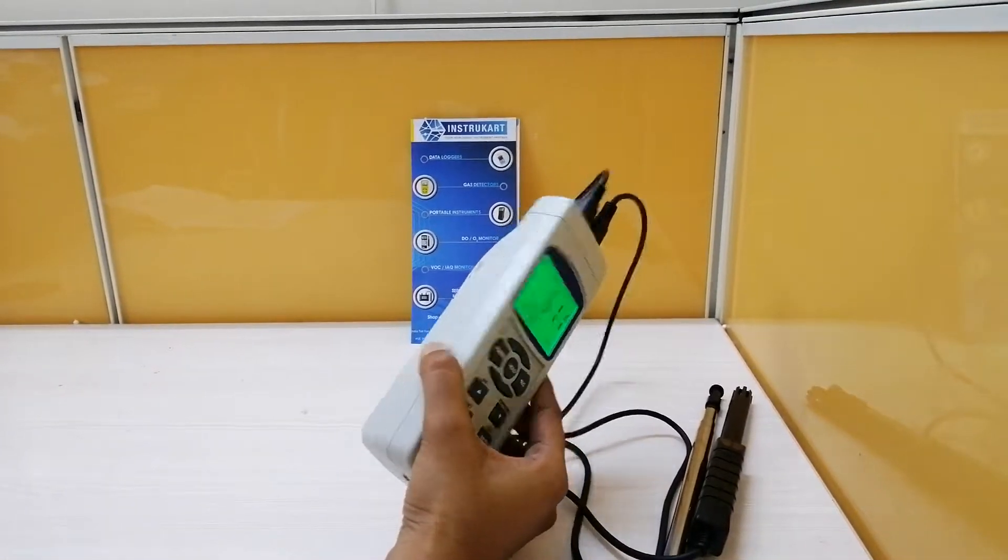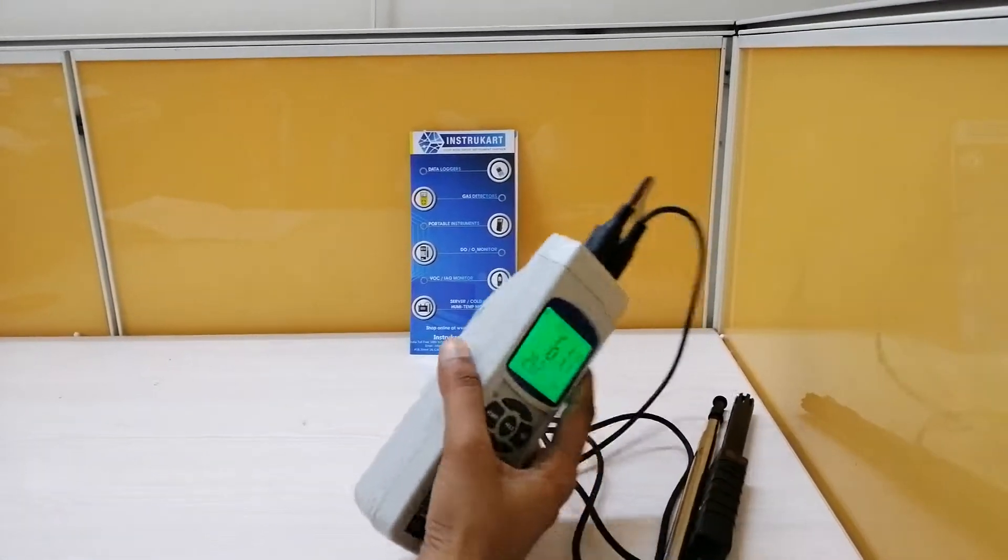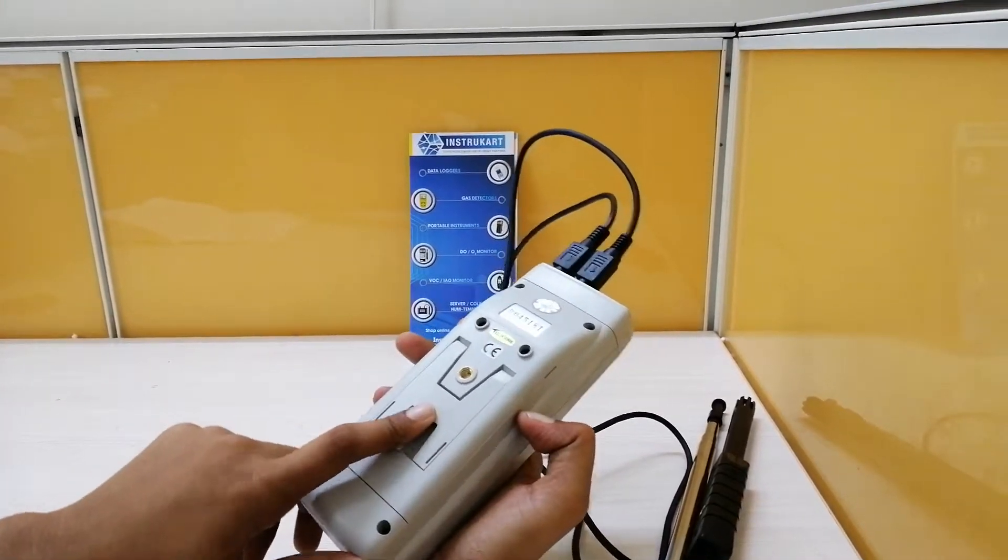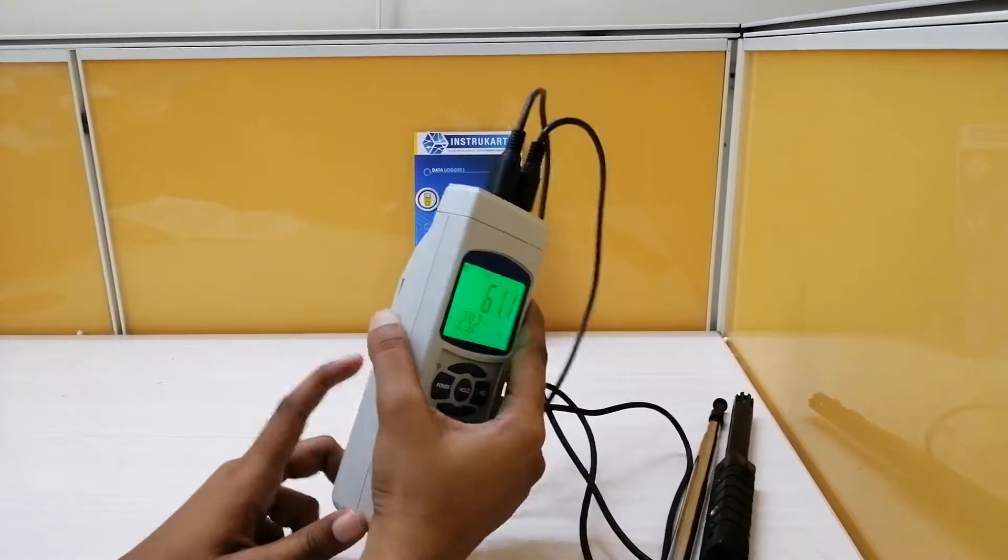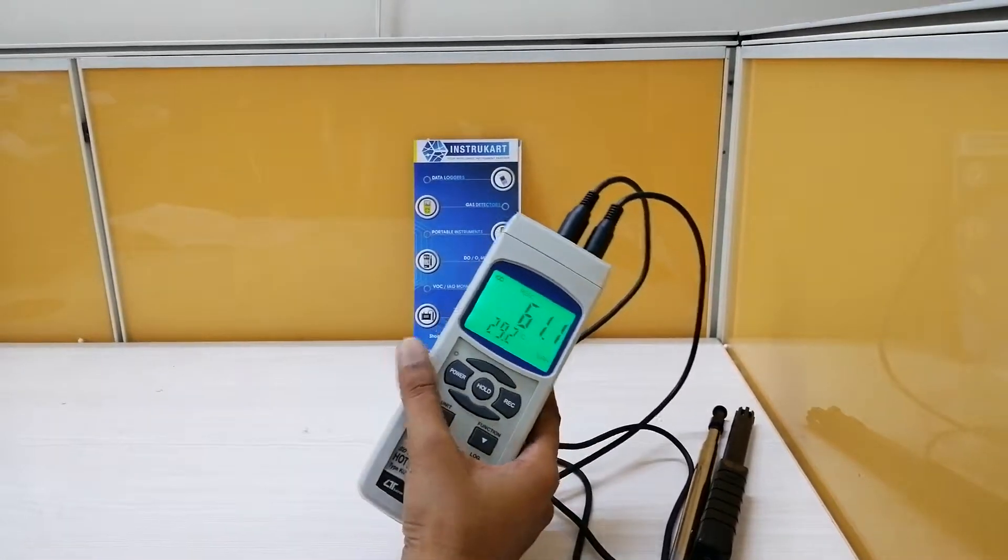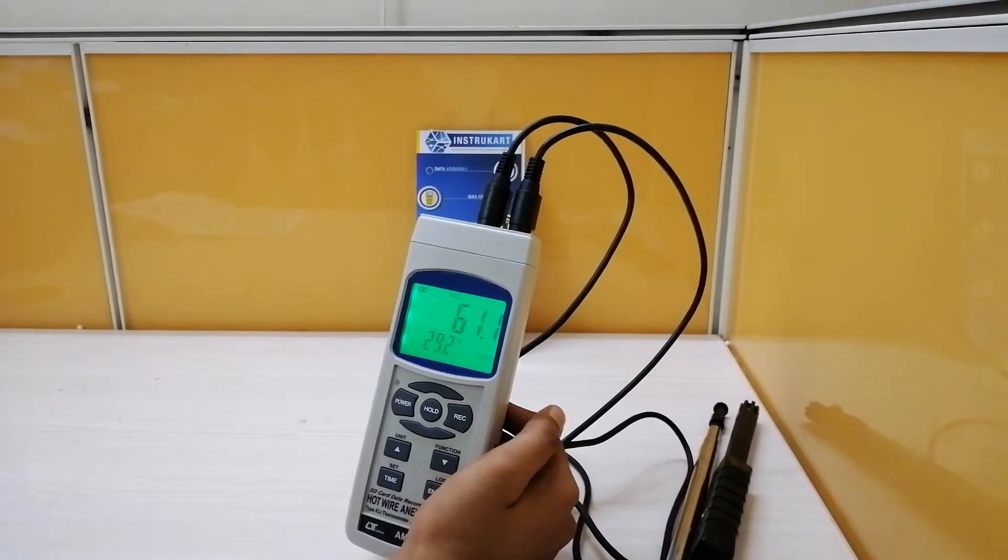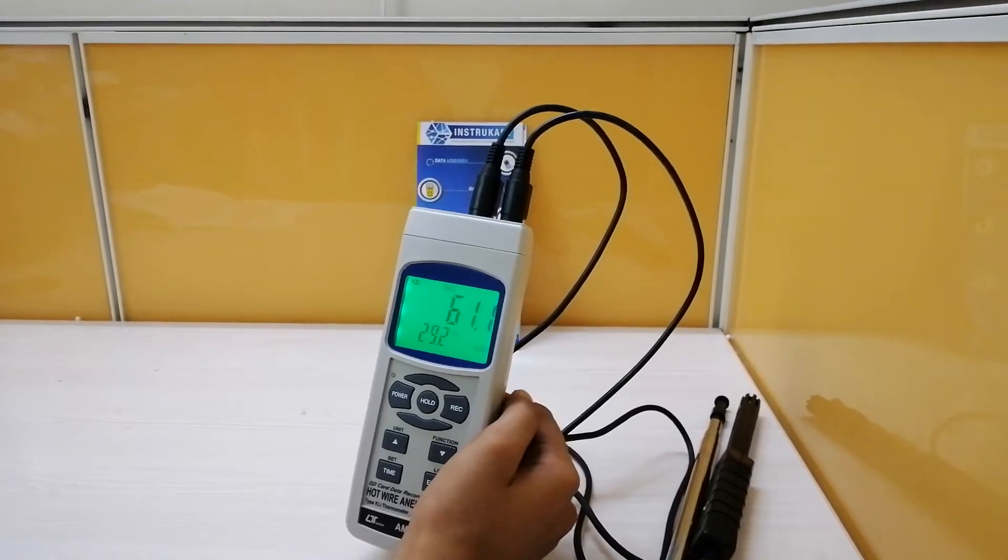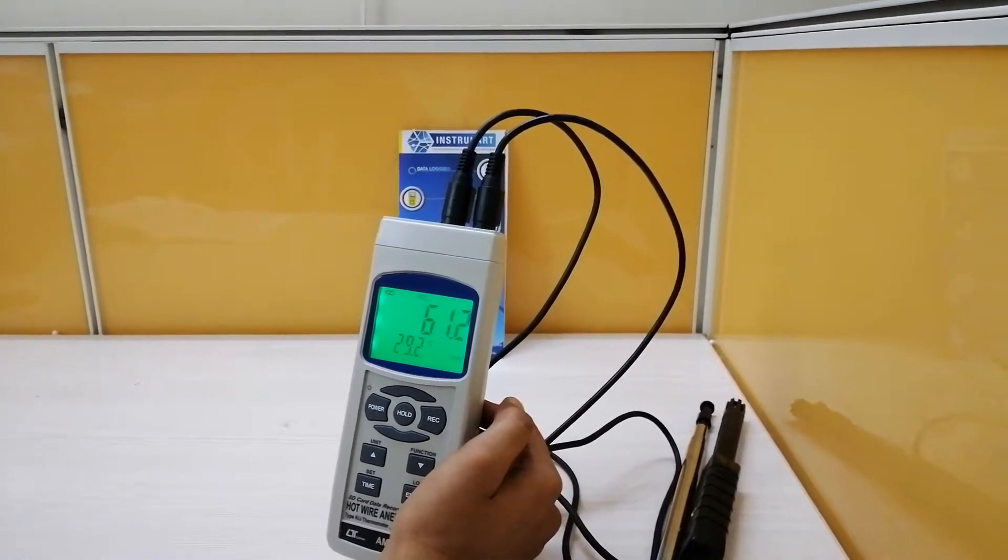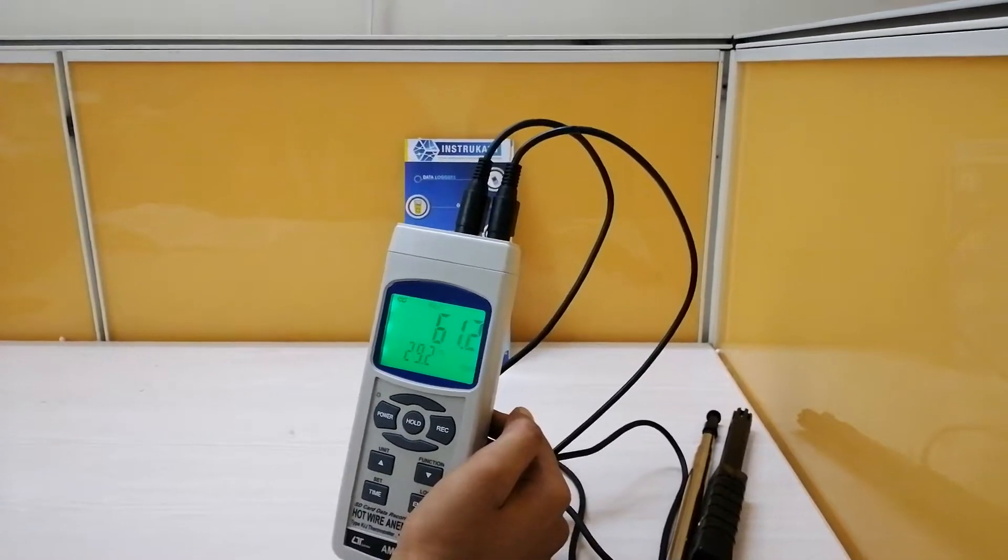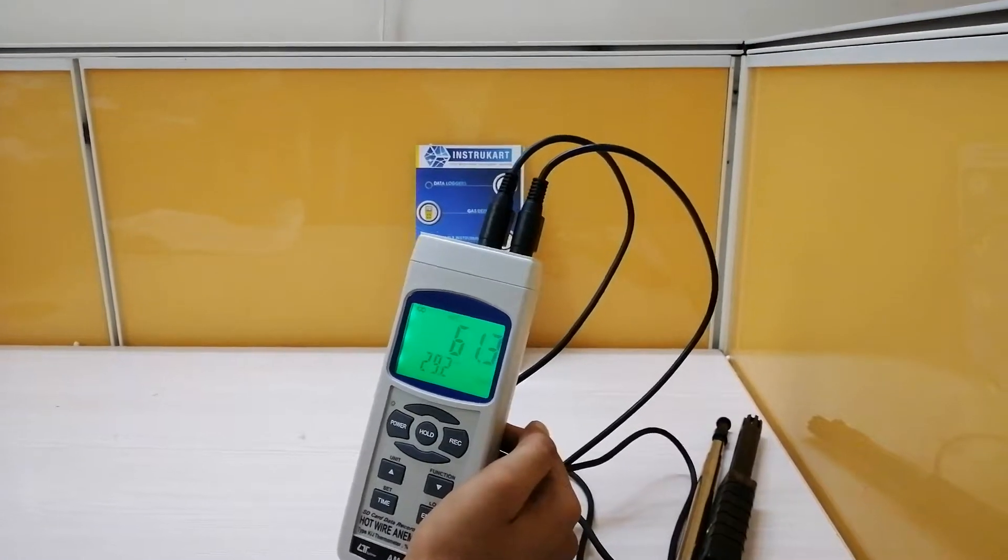It works with the power supply of DC 9 volts, with 6 pieces of 1.5 volt batteries placed in this anemometer. It can also measure the air temperature in a range between 0 to 50 degrees Celsius. You can also measure in degrees Fahrenheit 32 degrees to 122 degrees with a resolution of 0.1 degrees Celsius or 0.1 degrees Fahrenheit, with an accuracy of plus or minus 0.8 degrees Celsius.